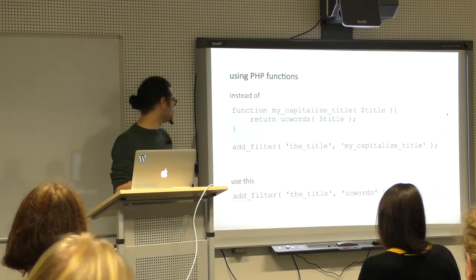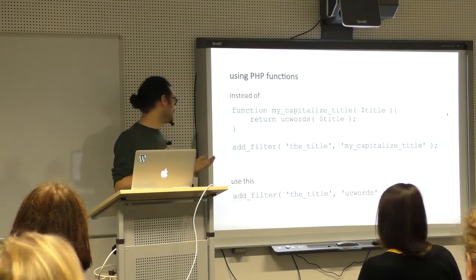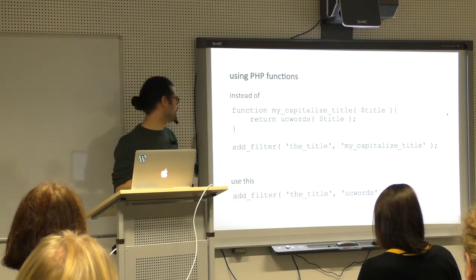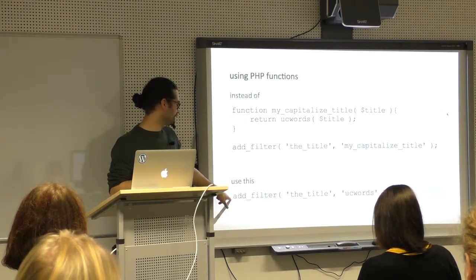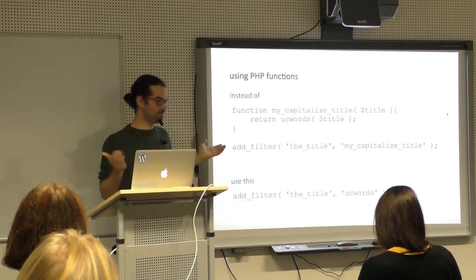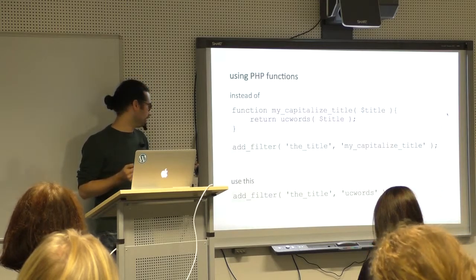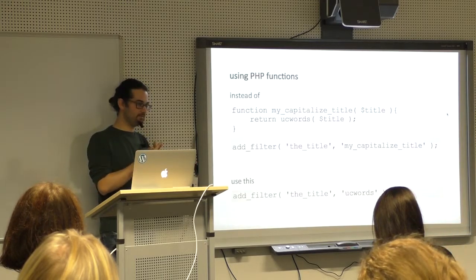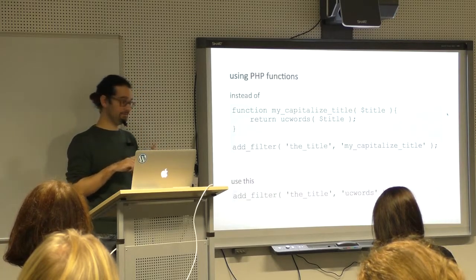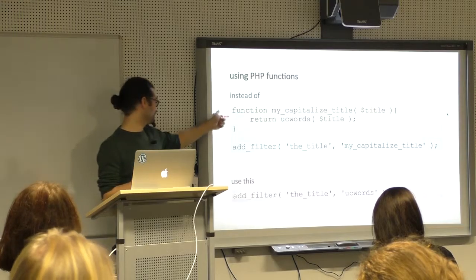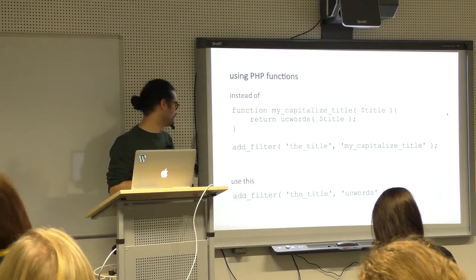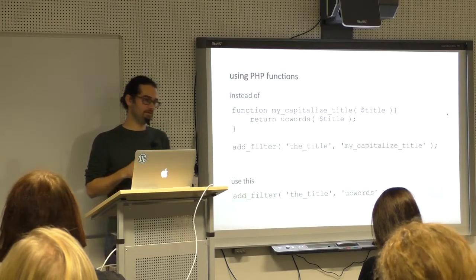Here's something good to keep in mind. In my earlier example using 'return ucwords()' to capitalize words, this can actually be shortened. ucwords() is already a PHP function that accepts a string argument like the title and returns it — exactly what every filter function should do. So if your callback looks like that, you can just pass 'ucwords' directly as the callback string, without needing to define a new wrapper function.